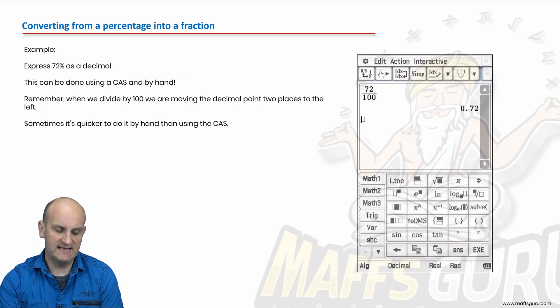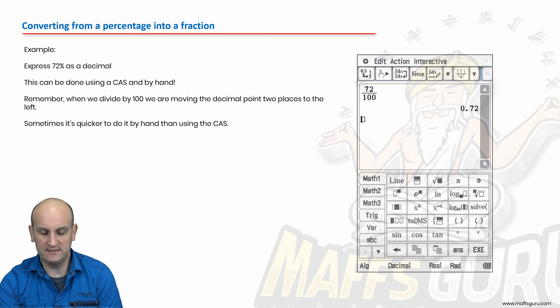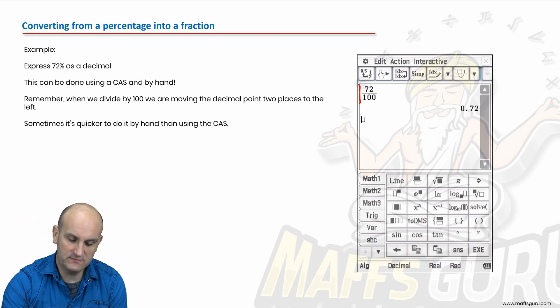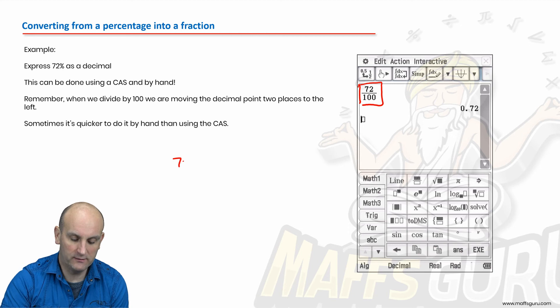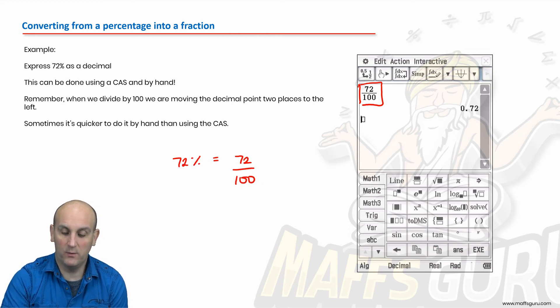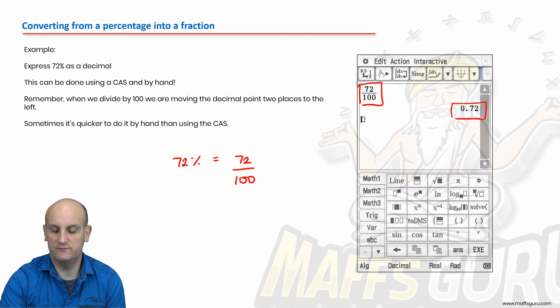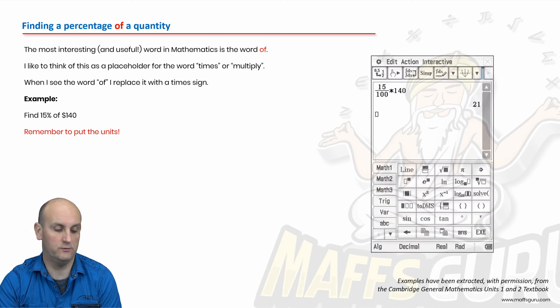Express 72% as a decimal. Well, there we go. Once again, 72%, 72 over 100, because we know that 72% is the same as 72 divided by 100, and as a decimal, gave me 0.72. Now again, remember, I had to make sure that my calculator was in the decimal mode.